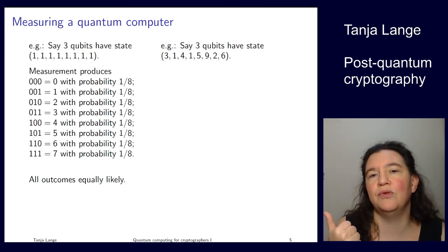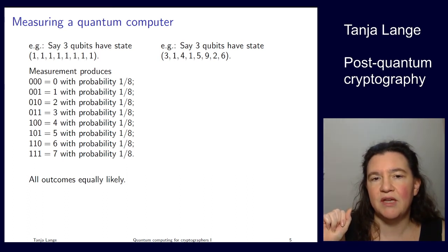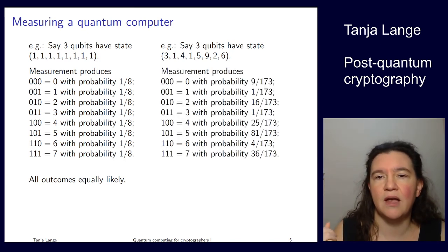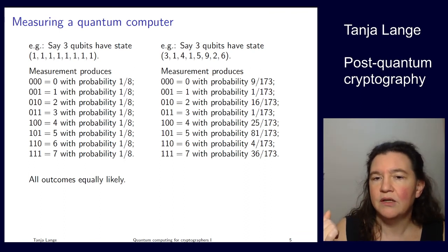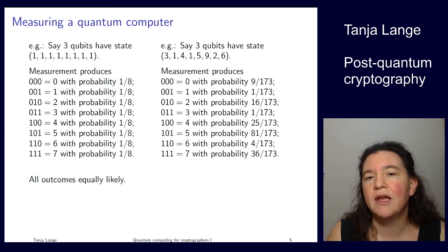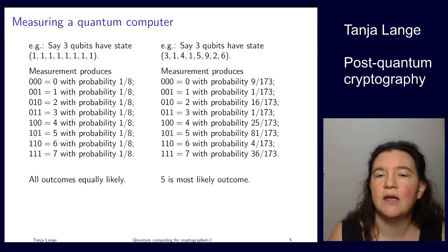If we get a more interesting input, so we're having three qubits with values 3, 1, 4, 1, 5, 9, 2, 6, then we have to compute the sum of the squares of all these numbers. I'm getting the zeros position, which contains value of three, with something proportional to three squared, so nine, divided by the sum of these squares. Now that is 137. The nine would be the highest here, giving probability 81 over 173, so almost a half. So I have a pretty high chance of measuring five, that's where the nine is.